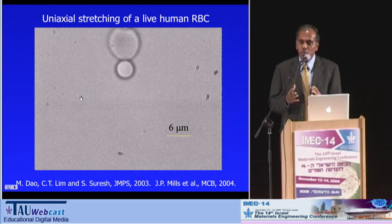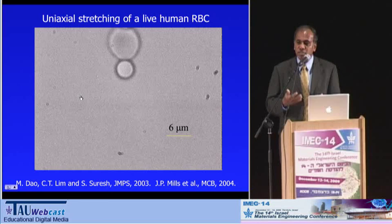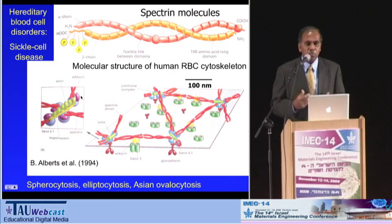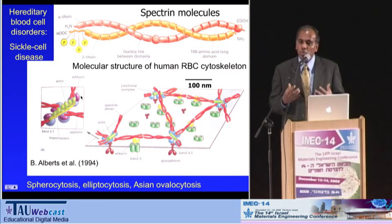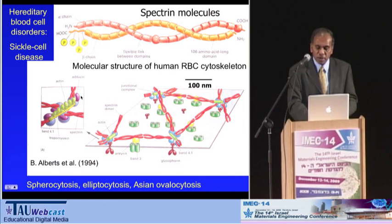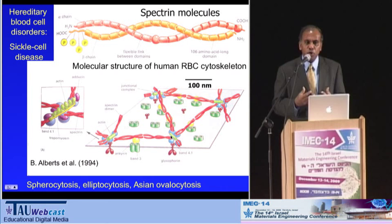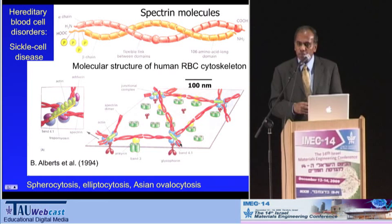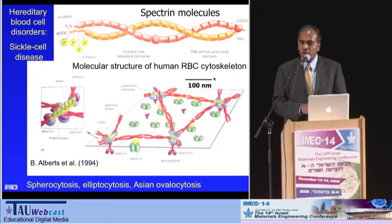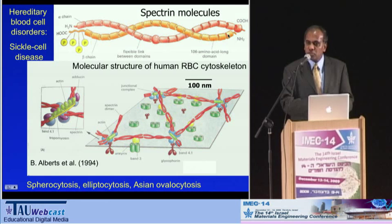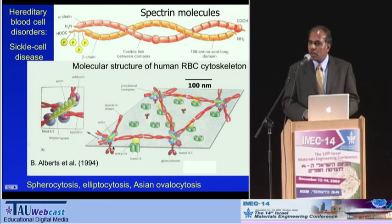For that, we did continuum-level models — that's what many people have done — but these days, with the sophistication of computer software and hardware, we can do much better. If you look at any undergraduate cell biology textbook, this is the molecular structure of the spectrin network, which is the cytoskeleton of the human red blood cell. It has an approximately triangular-shaped network with alpha-beta spectrin molecules, and the length scale is 100 nanometers. These molecules contain domains of amino acid chains that are linked together and tethered to the membrane of the red blood cell through specific proteins. An error or defect in these connections leads to different types of hereditary blood disorders.